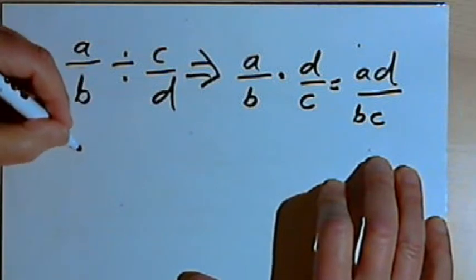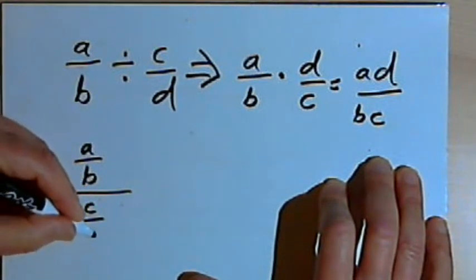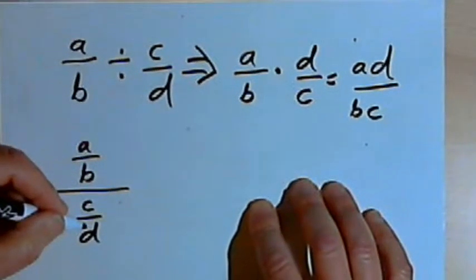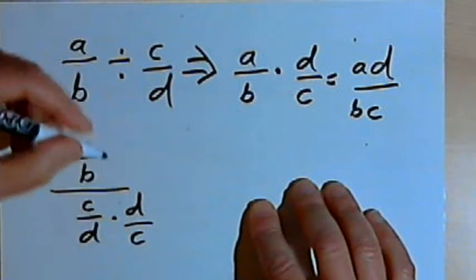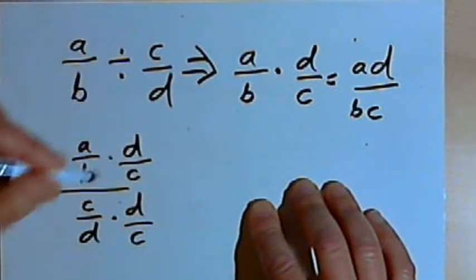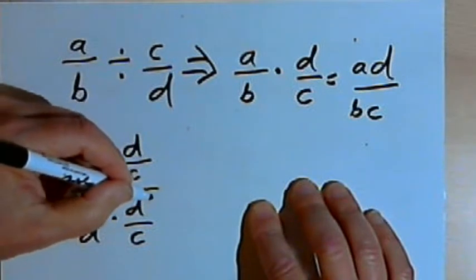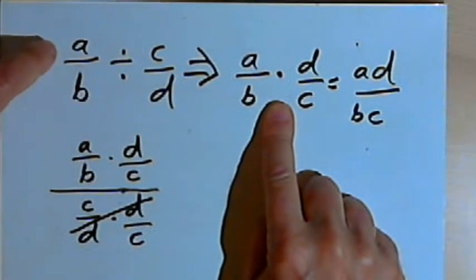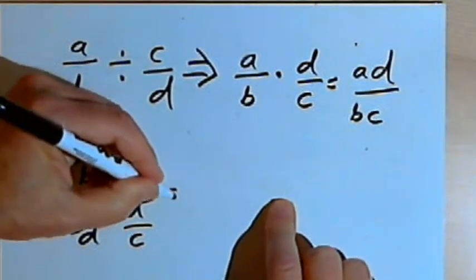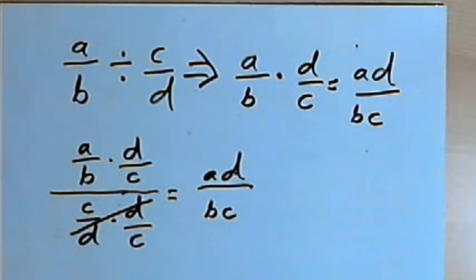Now let's take that problem and write it as one big fraction: the numerator a over b, over the denominator c over d. I'll multiply both the numerator and the denominator by the reciprocal of the denominator, which is d over c. Looking at the denominator, c over d times d over c equals 1, so I can cross that out and just deal with the numerator. The numerator is a over b times d over c — which is exactly what happened when I turned the division problem into multiplication. Multiplying that out gives ad over bc. So that's why the rule for dividing fractions works no matter what your two fractions are.